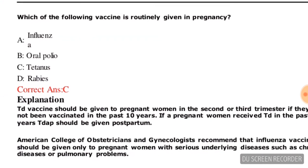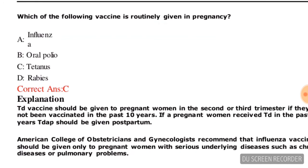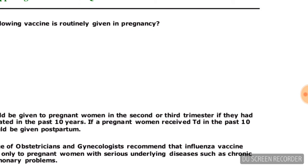Next question: which of the following vaccines is routinely given during pregnancy? Options are: influenza, oral polio, tetanus, or rabies. The correct answer is option C — tetanus is given during pregnancy.